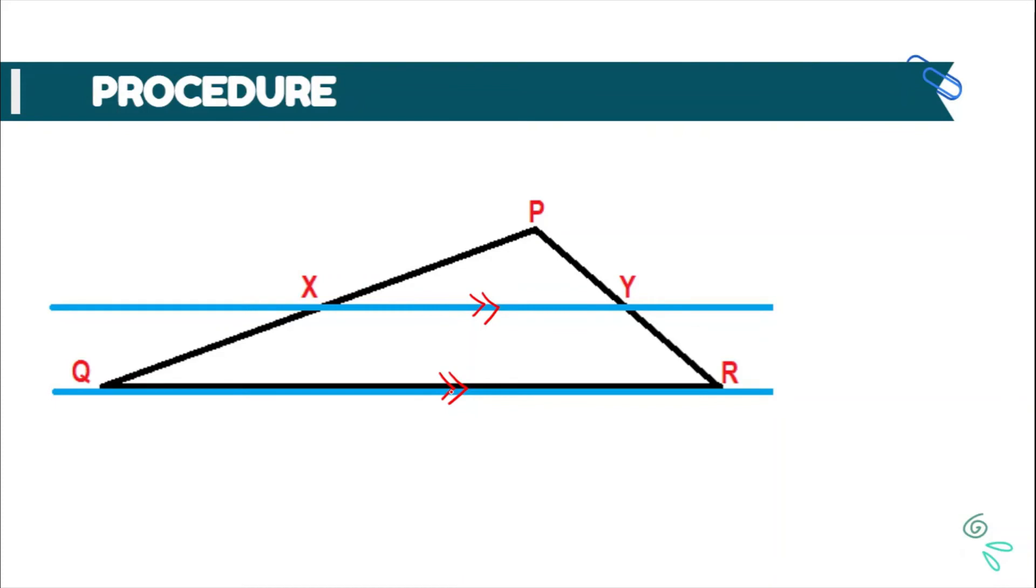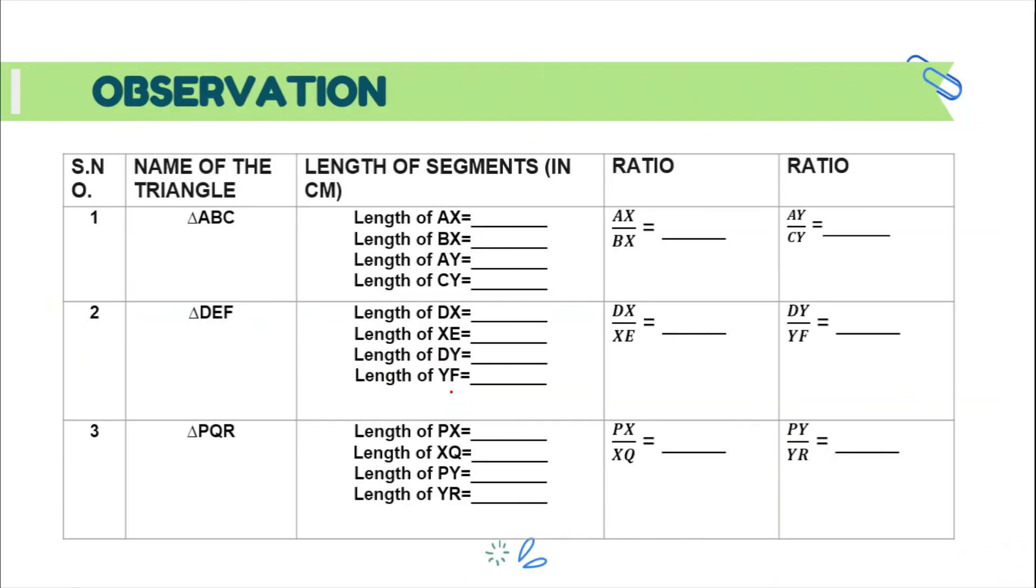You should not just copy paste this table. After tabulating this observation table, you are also supposed to write your observation. In triangle ABC, write what is the length of AX, what is the length of BX. You have to write down all these blank spaces by measuring the segments using your scale and then calculate the ratio. After calculating the ratio, you will see that these two values are same. These two values will be same for each triangle.